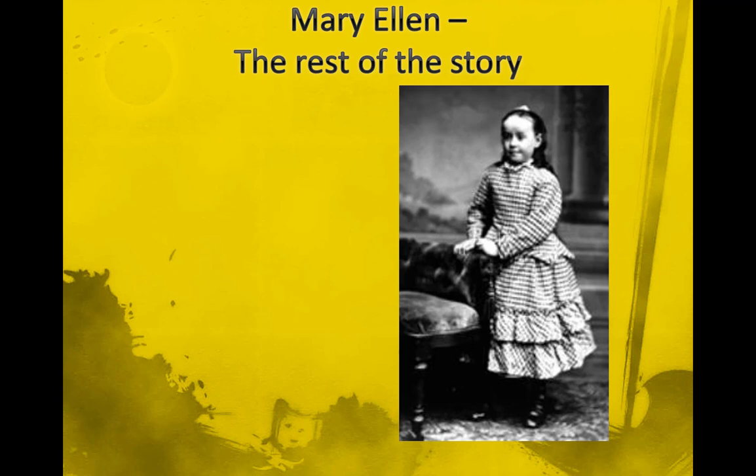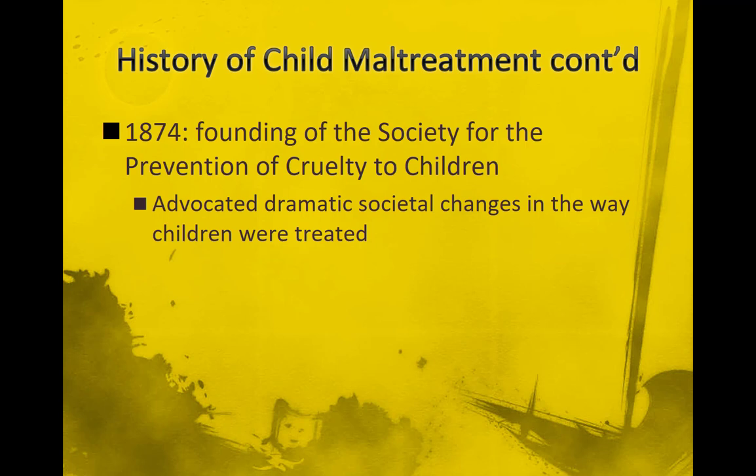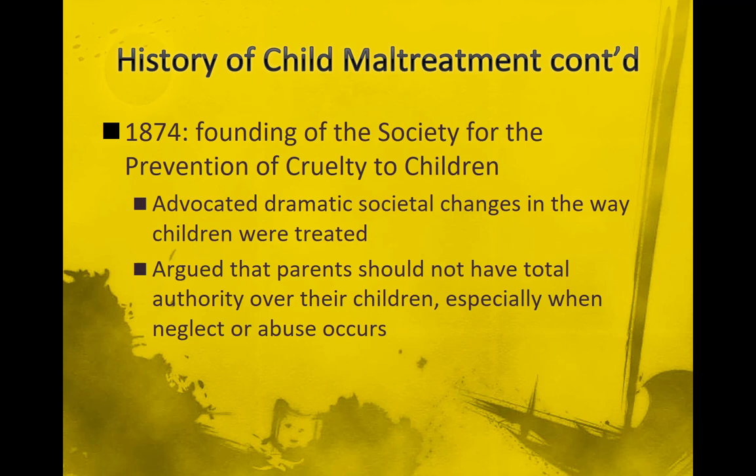Mary Ellen lived with Sally Engle until Mrs. Engle died, after which one of Etta's sisters became her guardian. Mary Ellen lived into her 90s, had two children, and took very good care of them. She named one of her daughters Etta. Years later, one of Mary Ellen's daughters wrote to the director of the SPCC - which was founded based on this case - wanting to know more about her mother's history. Mary Ellen lived a long and good life, but it took Etta Wheeler several tries to get it right.